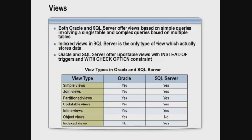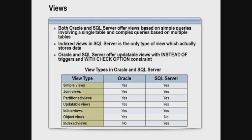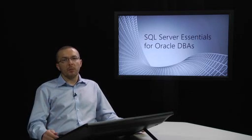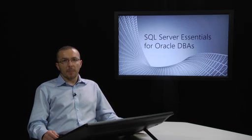Both Oracle and SQL Server offer various types of views, from simple views based on simple queries to more complex materialized views. SQL Server calls materialized views indexed views, and these are the only views in SQL Server that actually store data. When you materialize a view in SQL Server, you create a clustered index on the view, which builds a B-tree containing the data. That B-tree is maintained like any other index every time the underlying base table data is updated — very similar to Oracle's materialized views.